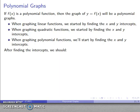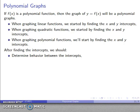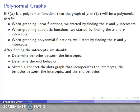Where things change: for a linear function, the x and y intercepts are enough because the graph is a straight line — two points define it. For a quadratic function, things are a bit more complicated, and for a polynomial function we have to do even more after finding the intercepts. We need to determine the behavior between the intercepts and what's called the end behavior of the polynomial function. Then we'll do a connect-the-dots graph incorporating all of this work.